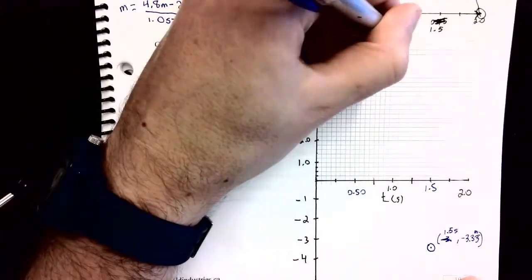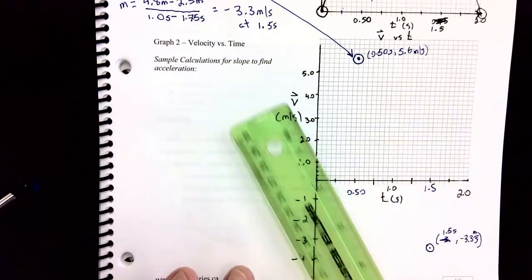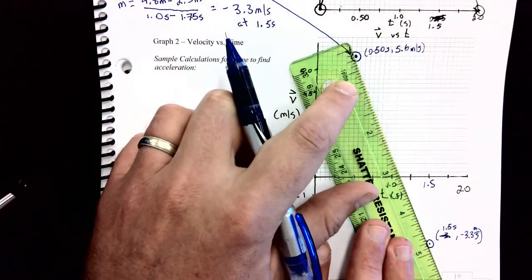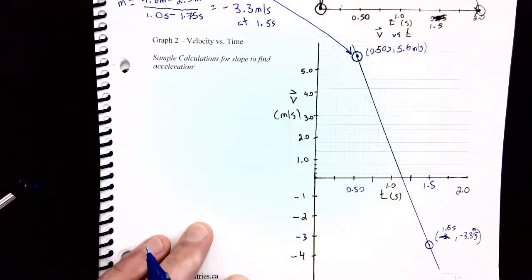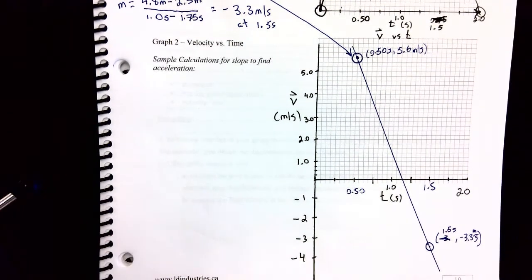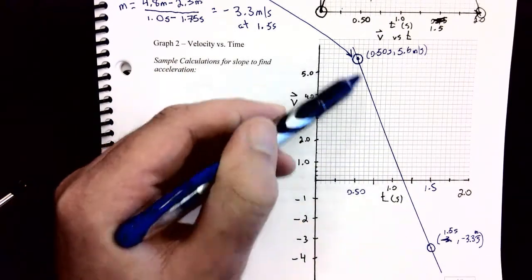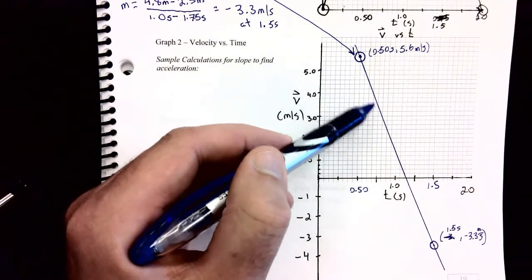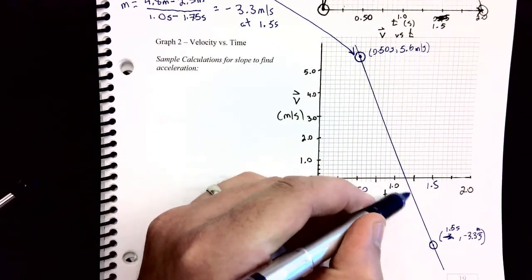So we now have two points. And we can connect those two points with a line, and that's what our velocity versus time graph looks like. It is a nice negative slope, showing that the object is going to be slowing down, slowing down, slowing down, reaching a velocity of zero, and then speeding up, speeding up, speeding up.